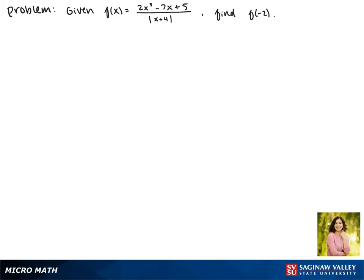Given that f of x equals 2x cubed minus 7x plus 5 divided by the absolute value of x plus 4, we'll be finding f of negative 2.